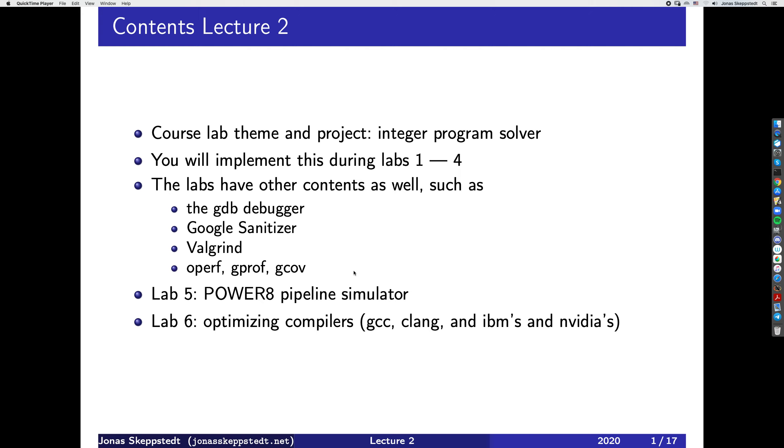In the last lab you will see different optimizing compilers for Power, including gcc, clang, and IBM's of course, since they make the Power machine. Also NVIDIA makes an optimizing compiler for Power as well, which may come as a surprise.